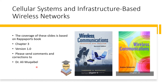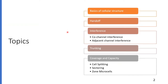Of course you can follow other books if you like. The coverage of these slides is based on Rappaport Chapter 3. If you have any comments please share with me — some of these slides or content are shared by colleagues, and I'd like to give credit accordingly. The topics we'll go over include the basics of cellular infrastructure, handoff, and interference.